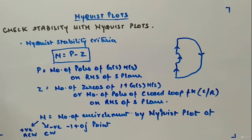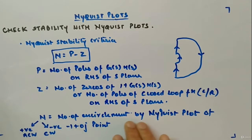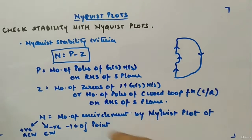N is the number of encirclements by the Nyquist plot of the point minus 1 plus j0. Why minus 1 plus j0 I will tell later on, but for now just remember we focus on this point.